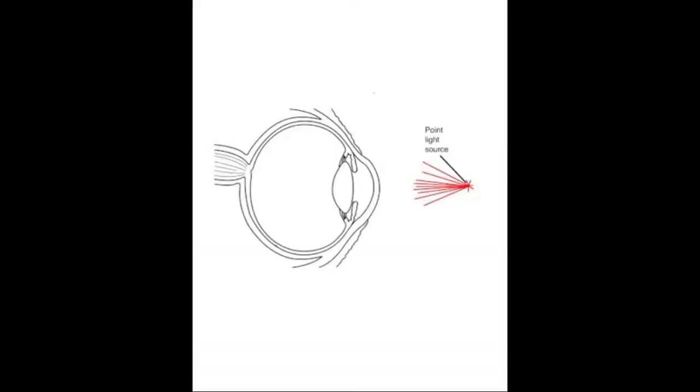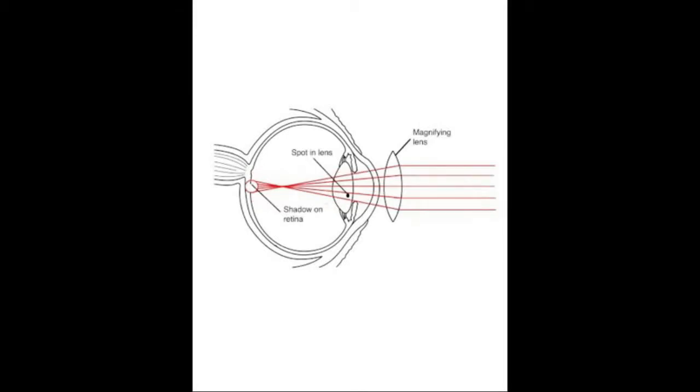What you're actually doing is creating a virtual image of the distant light. This image is functionally the same as a tiny light source held too close to your eye for you to focus on. You can also create a real image using a magnifying lens. However, using a mirror or lens has the disadvantage that you will see any imperfections in the mirror or lens as shadows along with the shadows of things on or in your eye.